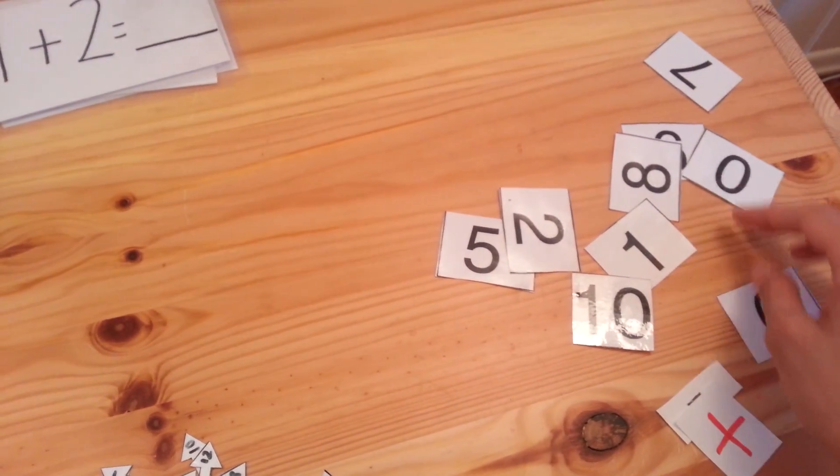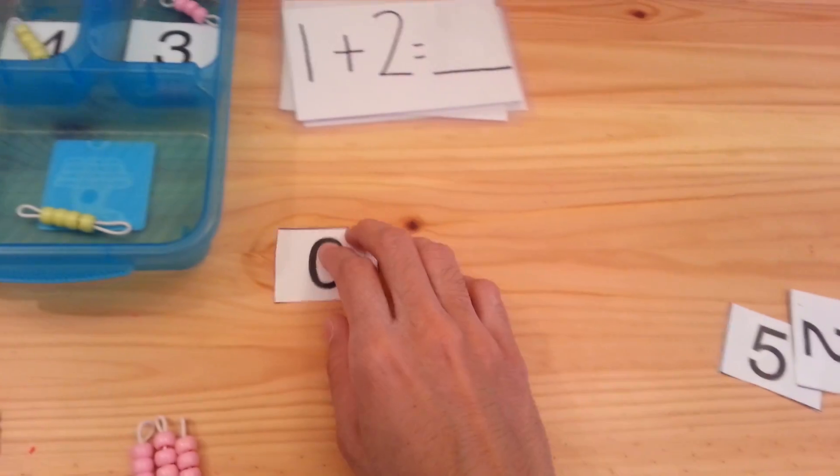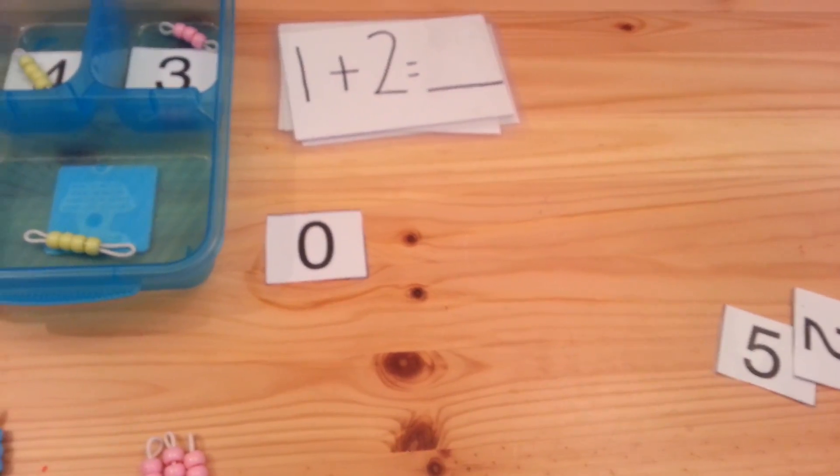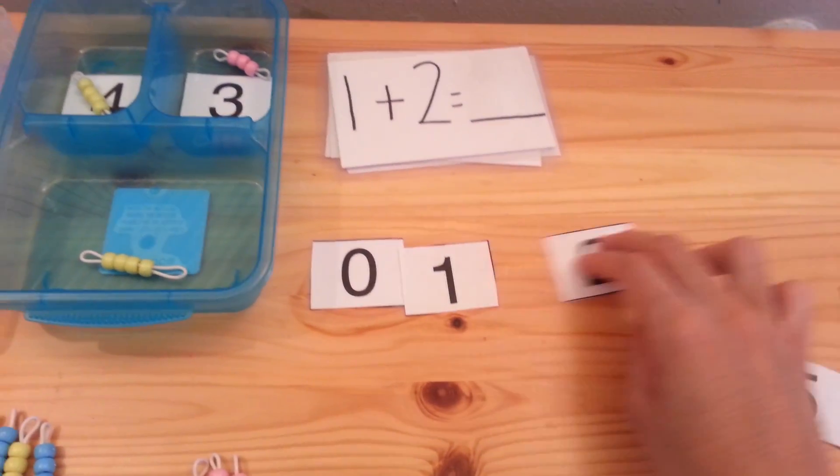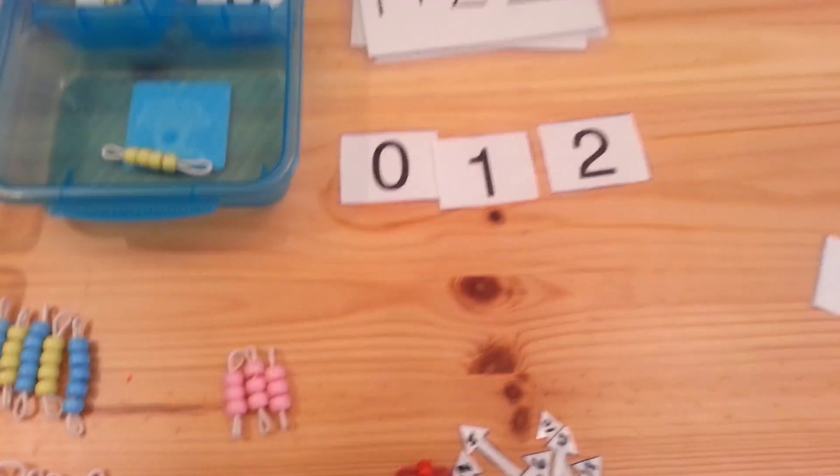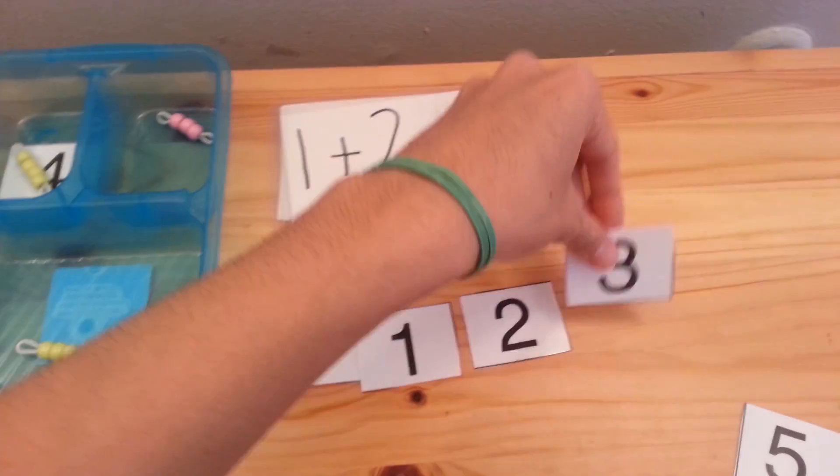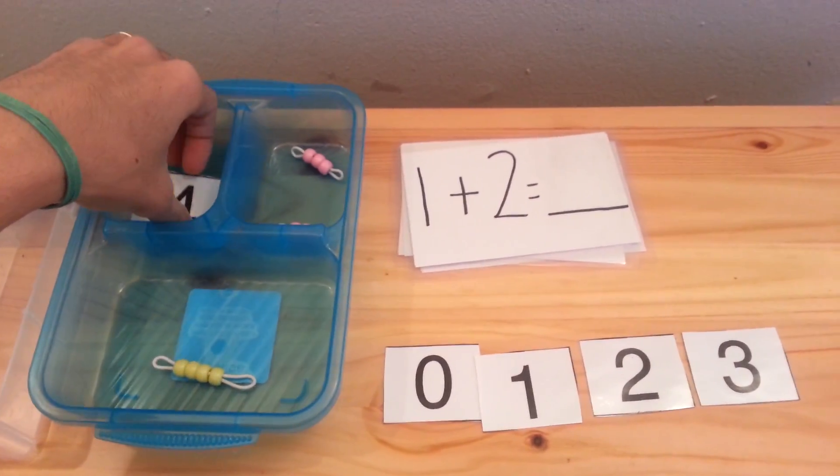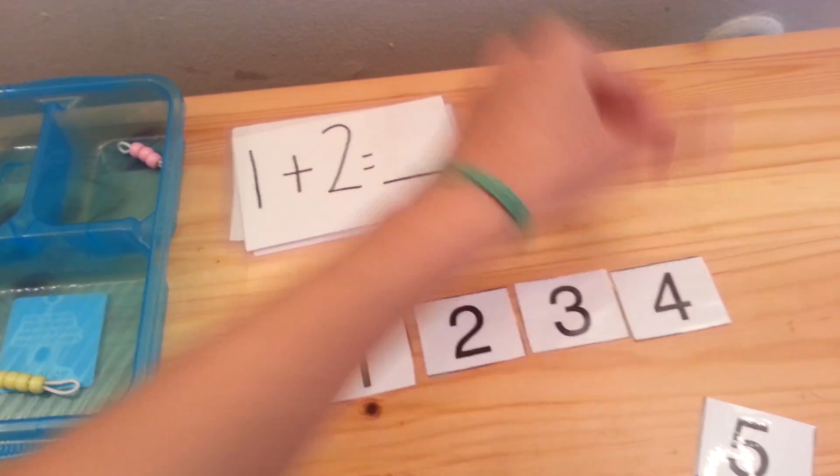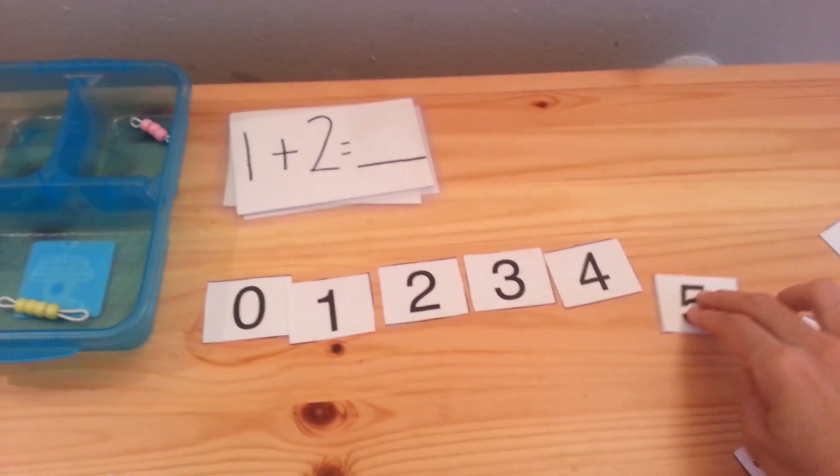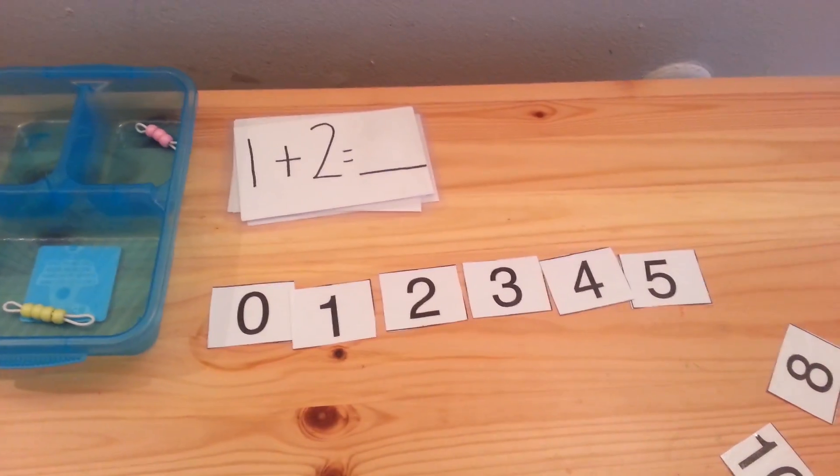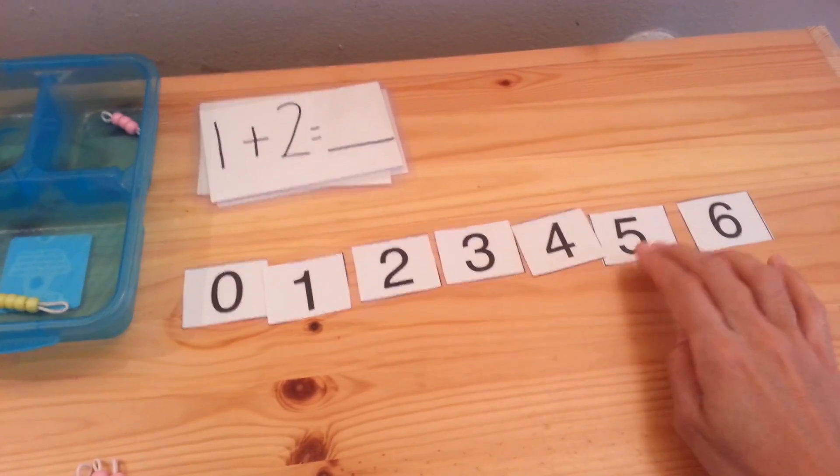Another activity is, I have these number cards here, and you want to have the child put these number cards in order. So this is good number order practice. Zero, one, two, and I've used some of them here. So three. You can get these number cards on my blog for free. Four, five, six, and so on. You can get all the way up to ten.